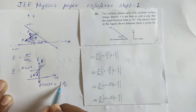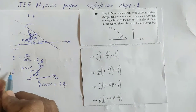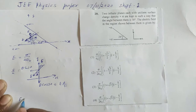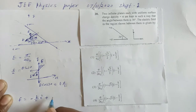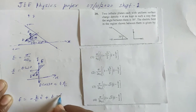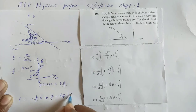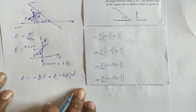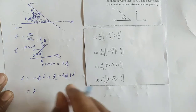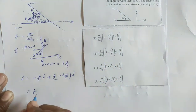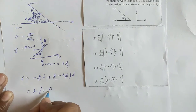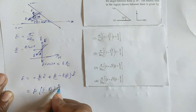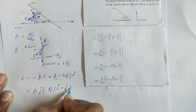The y direction component is E minus E root 3 over 2, and the x direction component is minus E over 2. So the net electric field is: minus (E/2) î-cap plus (E minus E root 3 over 2) ĵ-cap. Taking E common: E times [(1 minus root 3 over 2) ĵ-cap minus (1/2) î-cap].